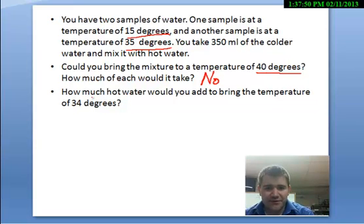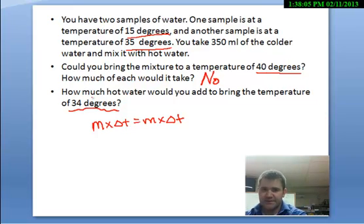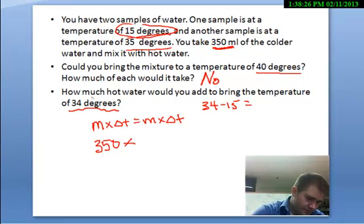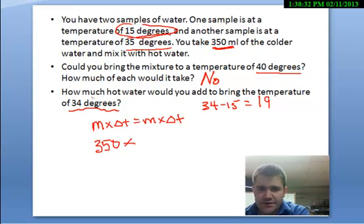How much hot water would you have to add to bring the temperature of the mixture to 34 degrees? So again, I'm going to go back to my mass times change in temperature of one equals mass times change in temperature to the other. Remember, I don't have to include C here because I'm talking about two samples of water with the same specific heat. And I say that I take 350 milliliters of the colder water, that comes from right here, times its change in temperature. Its change in temperature would go from 15 to 34, and 34 minus 15 equals 19 degrees Celsius is its temperature change. It's going to heat it by 19.